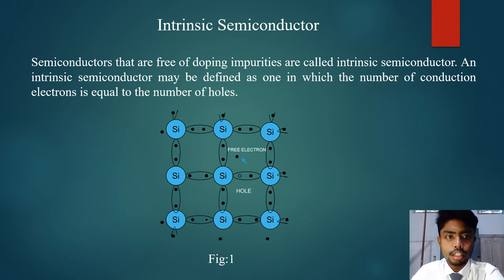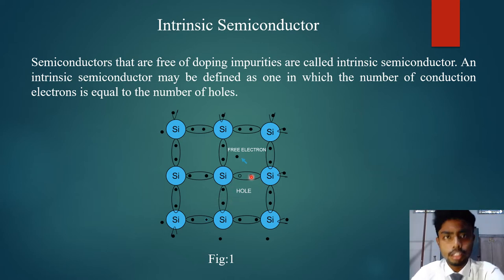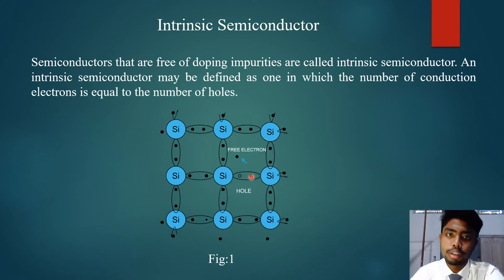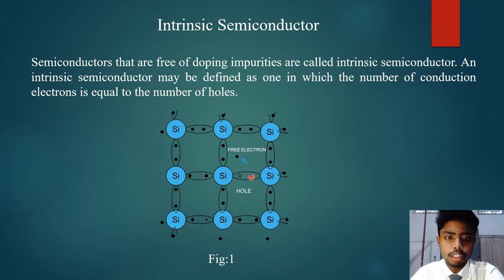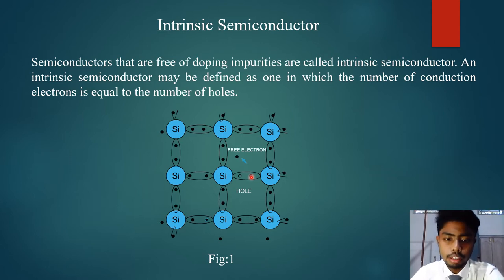An intrinsic semiconductor is one made of semiconductor material in its extremely pure form. Examples are pure germanium and silicon, which have forbidden energy gaps of 0.72 electron volt and 1.1 electron volt respectively. The energy gap is so small that even at ordinary room temperature there are many electrons which possess sufficient energy to jump across the small energy gap between the valence and the conduction band.